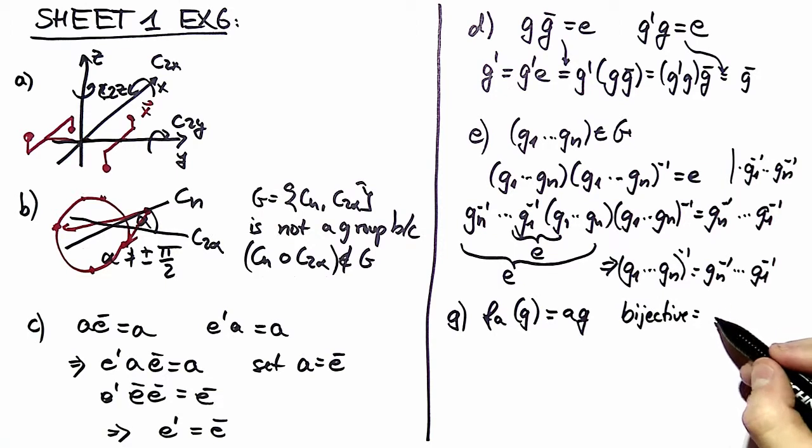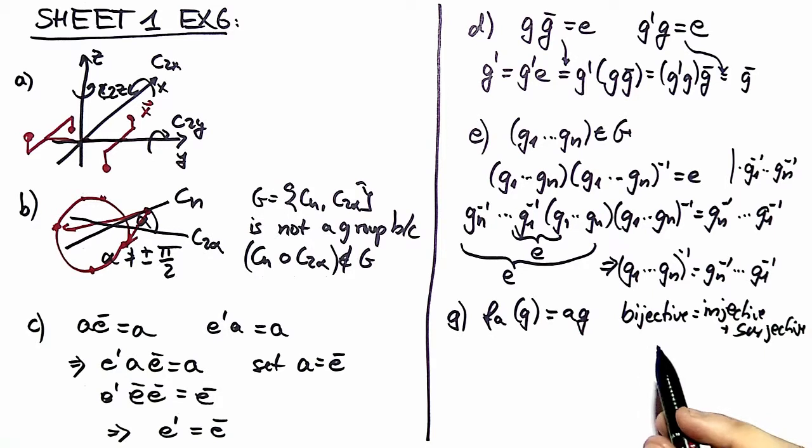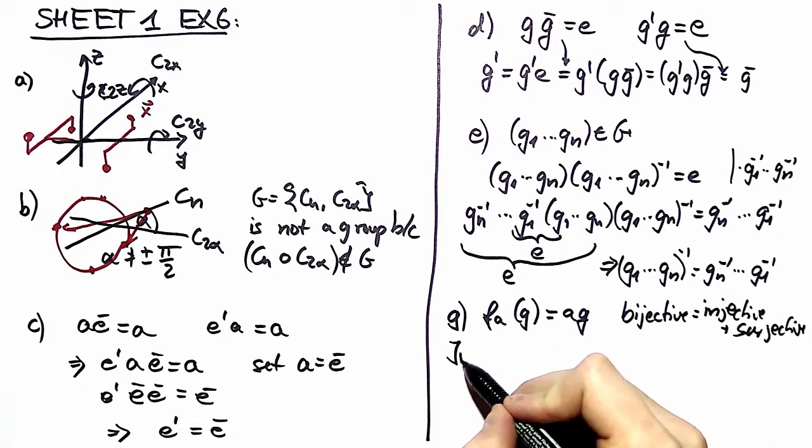Bijectiveness as you remember from analysis means injectiveness plus surjectiveness. First we want to show injectiveness.